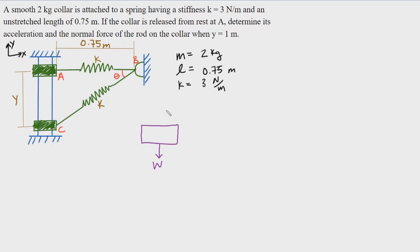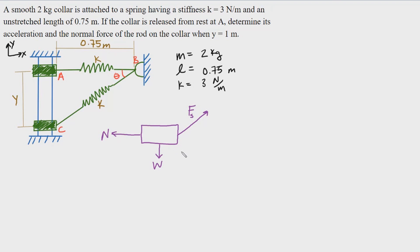Somewhere over here at some angle we're going to have a spring force pulling the collar — not pushing, pulling — that's the intrinsic property of the spring. However, notice that in this diagram the collar stays vertically on the pole, so there's no horizontal movement in the x-direction. To counteract the rightward component of the spring force, there's a normal force from the rod. That is all the forces on this free body diagram.